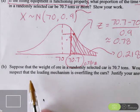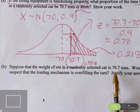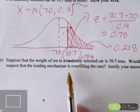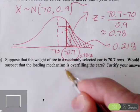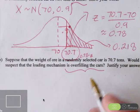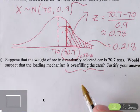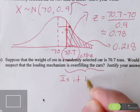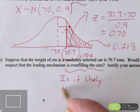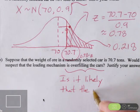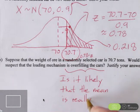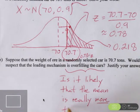Suppose the weight of ore in a randomly selected car really is 70.7 tons. Would that fact make you suspect that the loading mechanism is overfilling cars? When we say overfilling cars, we mean, do you think that the actual mean of the process is more than 70? Is it likely that the mean is really more than 70 tons?